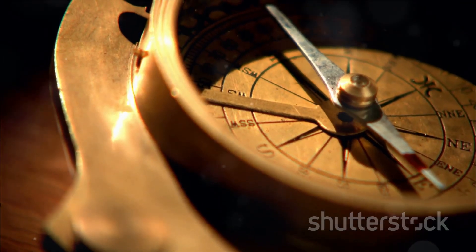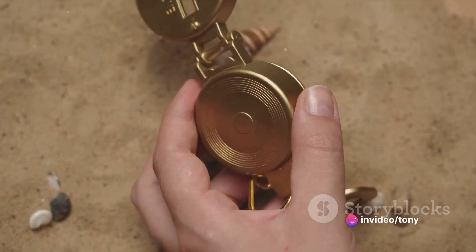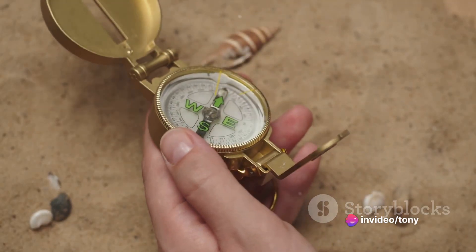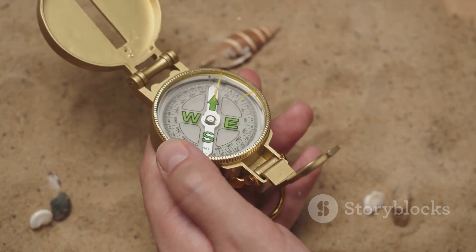In essence, the Earth's magnetism is not just a fascinating natural phenomenon, it's also a testament to the Earth's shape. So, the next time you look at your compass, remember, it's not just pointing north, it's also pointing towards the truth about our planet's shape.